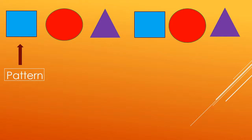Look at these shapes. We have a square, circle, triangle, square, circle, triangle and so on. This is called a pattern as it is repeating itself. Look, we got a pattern. Now let us try making a few more patterns.